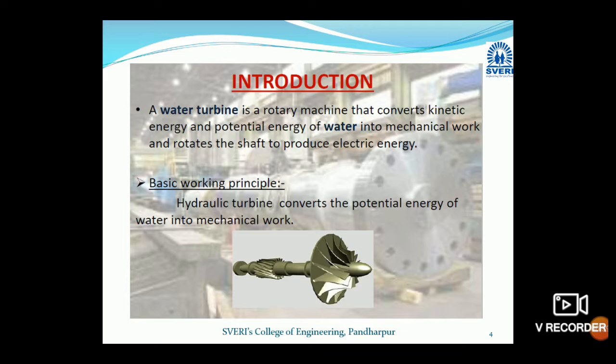A turbine is a rotary machine that converts kinetic energy as well as potential energy of water into mechanical work, and it rotates a shaft to produce electric energy. The shaft of the turbine is rotated — that is mechanical energy — and if this rotation of the shaft is carried out in the presence of a magnetic field, it generates electricity. So the basic principle is that it converts potential energy or hydraulic energy into mechanical work.